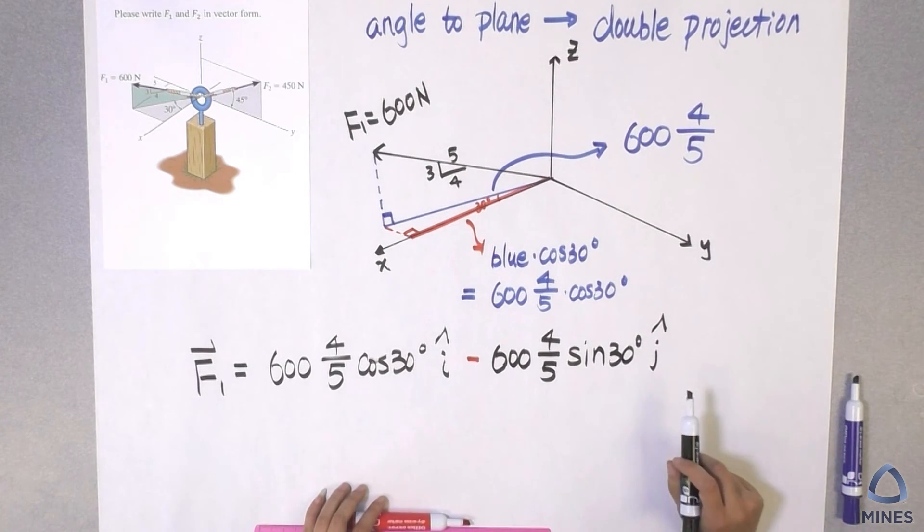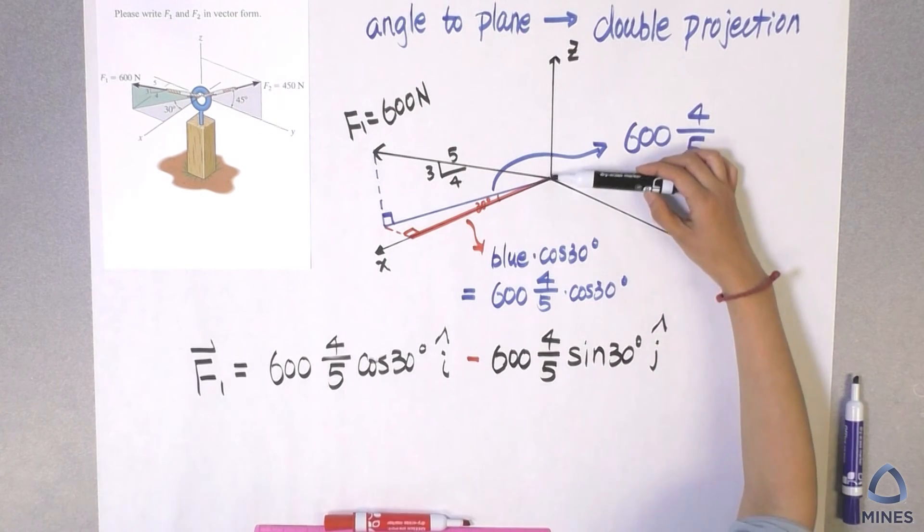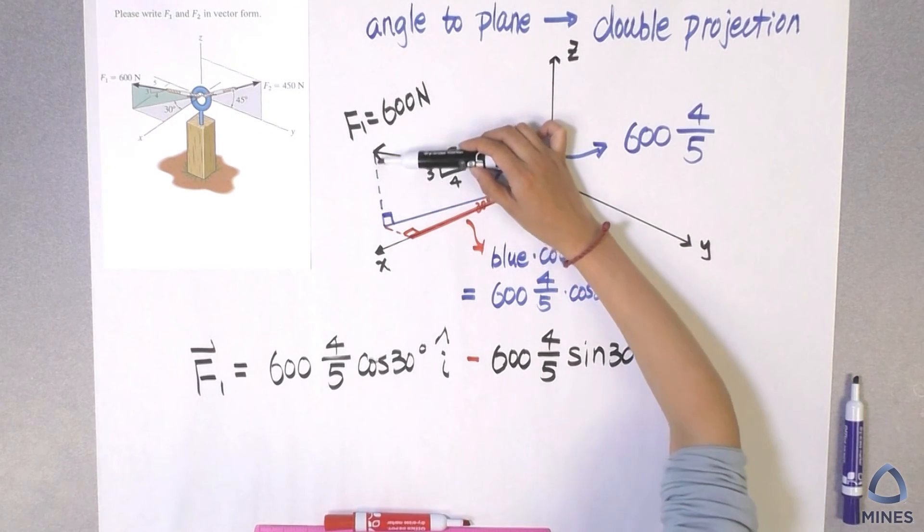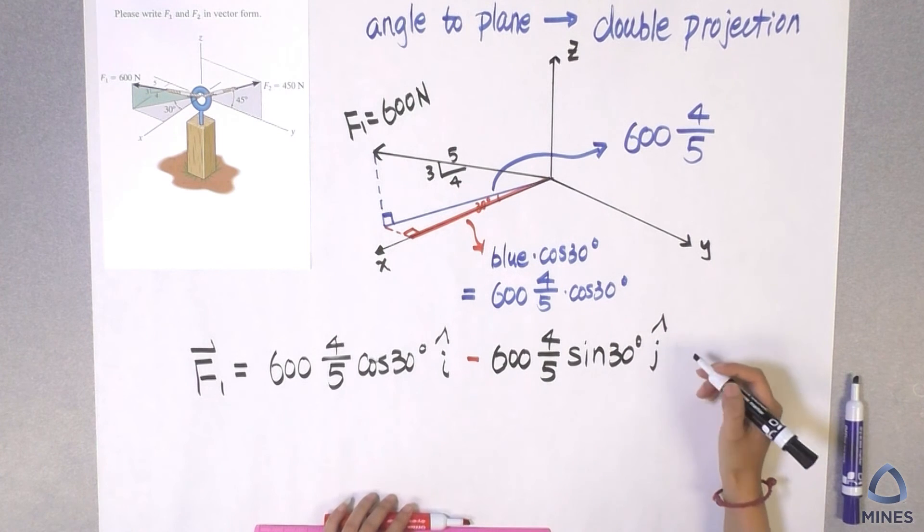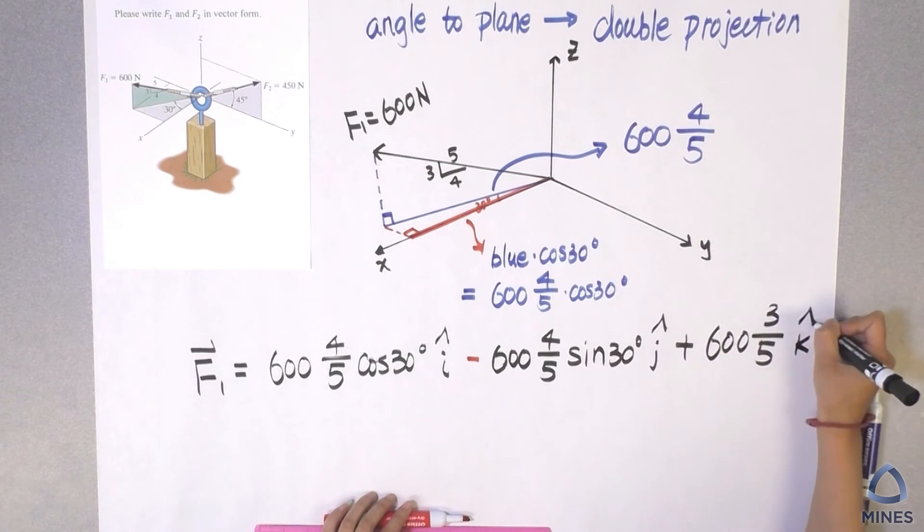Okay, so now let's take a look at the Z component here. That's going to be the blue dashed line here. So how much is that? 600, 3 over 5. That's going to be the k hat.